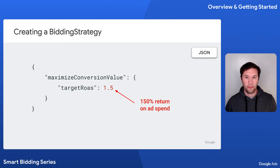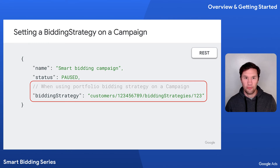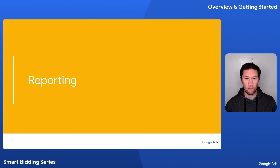Here's an example of a Smart Bidding strategy. Notice that we've set the maximize conversions value dot target ROAS field, which means the campaign will focus on getting as much conversion value as possible at the specified return on ad spend. Once the strategy is created, we'll set its resource name to the bidding strategy field on a campaign object in an update or create operation. Note that this is only necessary for a portfolio strategy — setting a standard strategy is done differently. Now the campaign using this bidding strategy is set up to use Smart Bidding and will optimize its bid amounts to maximize your conversion value at your return on ad spend goal.